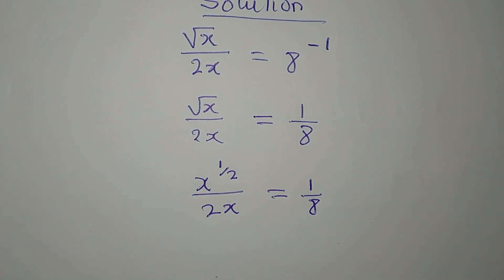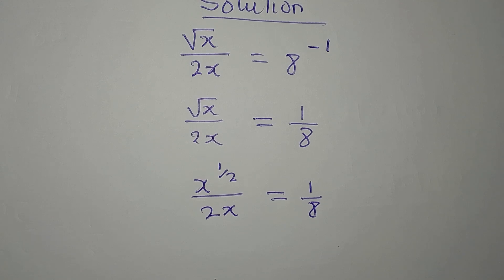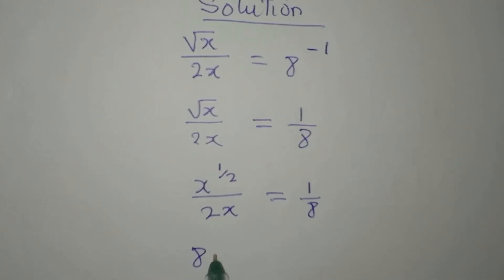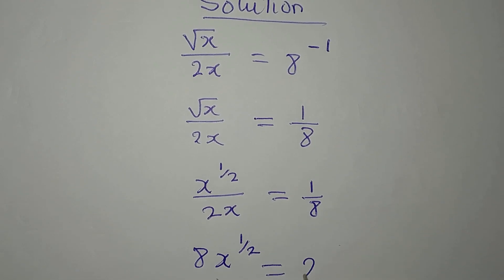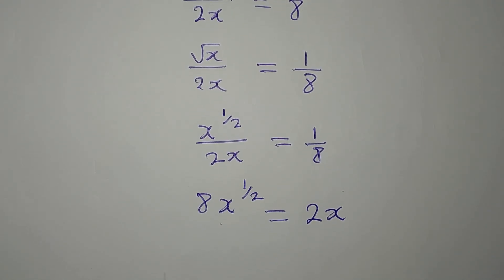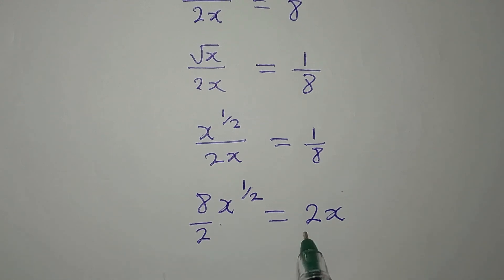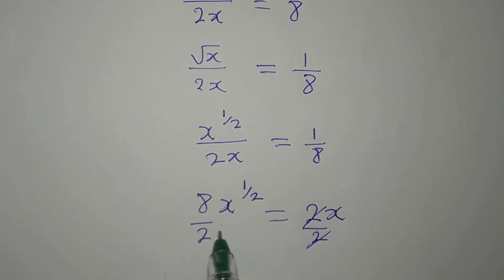Now we can cross multiply. If we do that, we have 8 times x to the power of 1 over 2 equals 2x, because 2x times 1 is 2x. We can then reduce this equation by dividing both sides by 2.